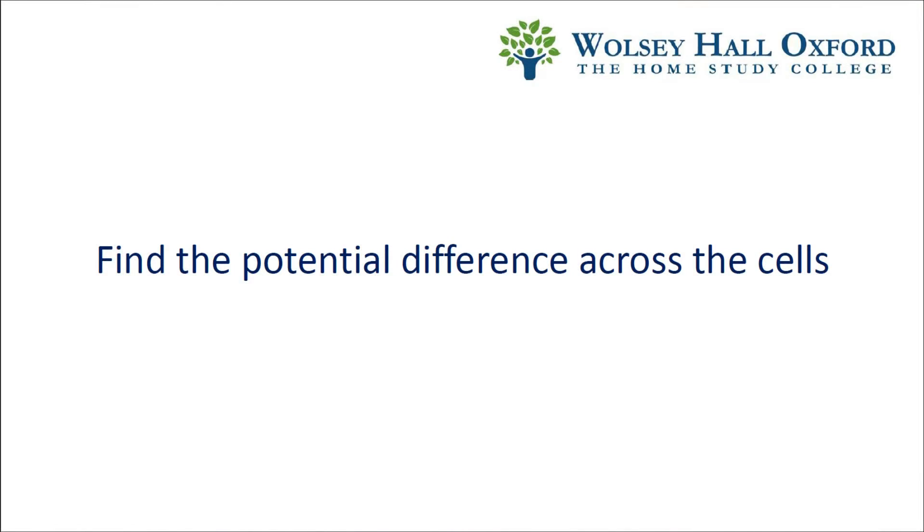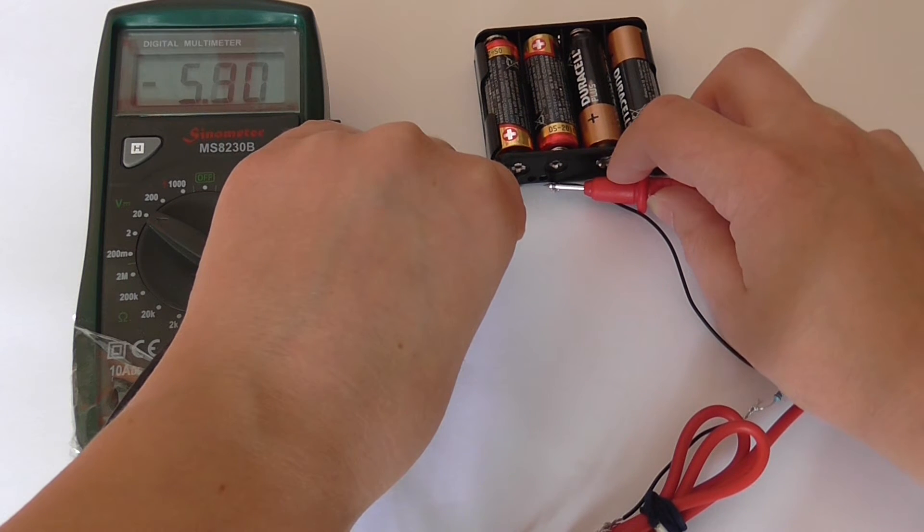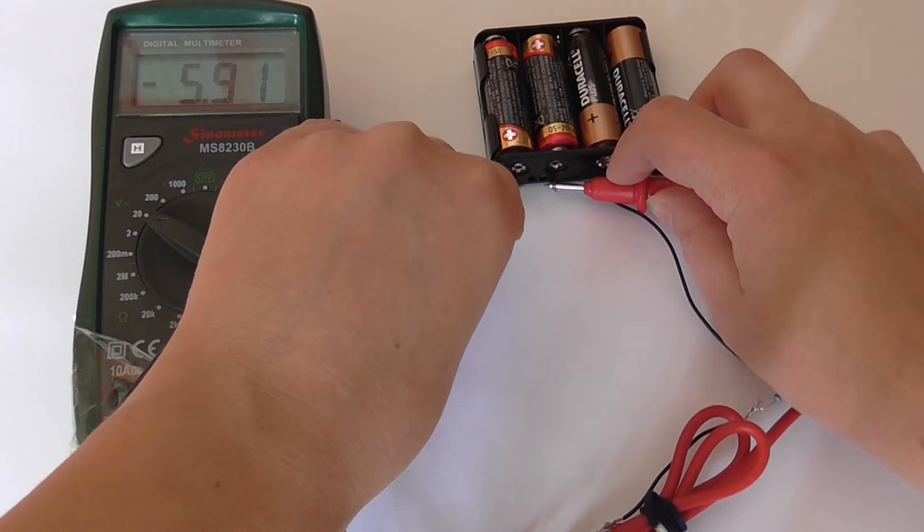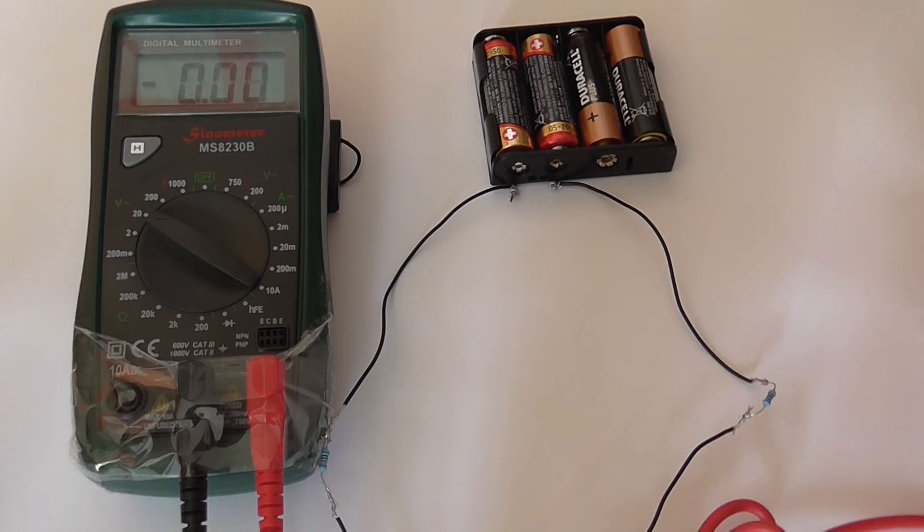The first step is to find the potential difference across the cells. You'd expect it to be 6, because that's 4 times 1.5, but it's only 5.91, because in batteries the EMF tends to reduce with use. You'll see I have the voltmeter in the 20 volt range, because the voltage is more than 2 volts.